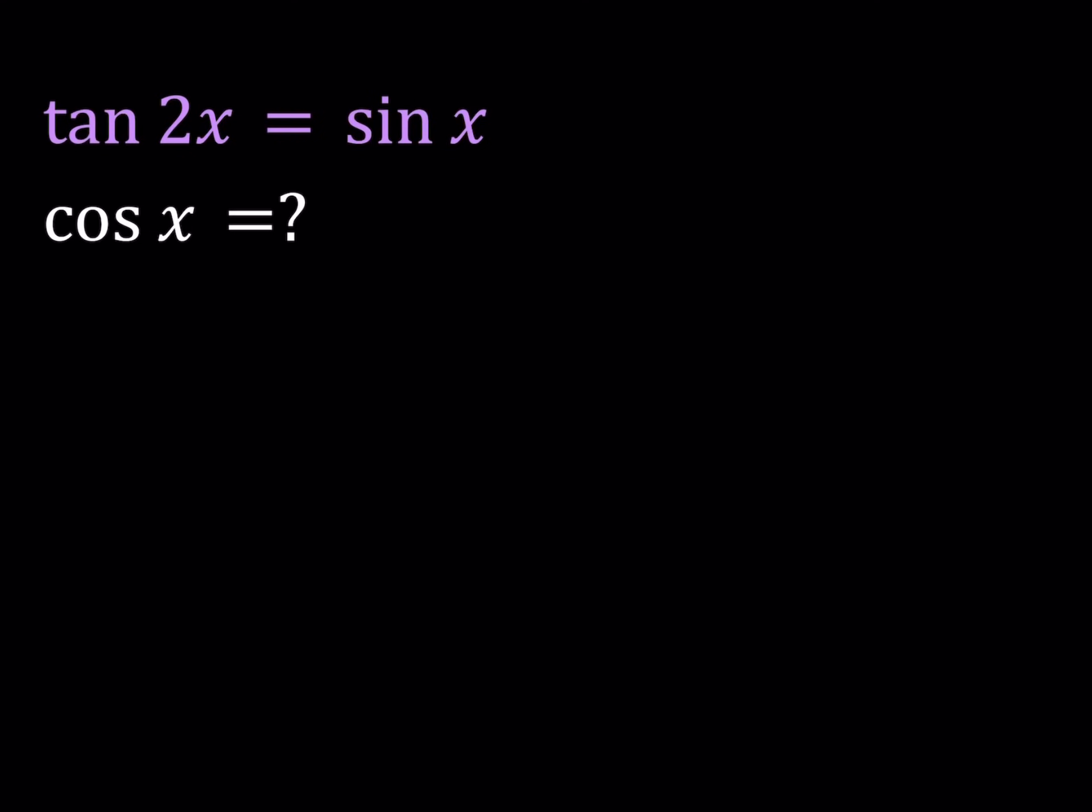So I'm going to write tangent 2x as, you know we have an expression for it, 2 tangent x divided by 1 minus tangent squared. But that's not what I'm going to do. I would like to write tangent 2x as sine 2x over cosine 2x. I've got to pay attention to a couple facts here. First of all, I need to make sure that cosine of 2x does not equal 0 because I don't want this to be undefined, obviously. And then set it equal to sine x.